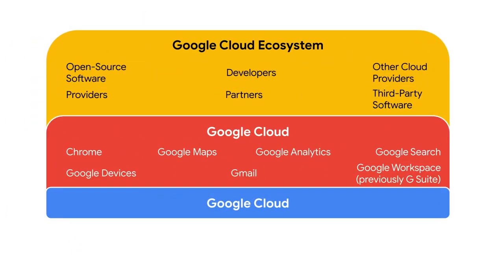When you look at Google Cloud, you'll see that it's actually part of a much larger ecosystem. This ecosystem consists of open source software, providers, partners, developers, third-party software, and other cloud providers. Google is actually a very strong supporter of open source software. Now, Google Cloud consists of Chrome, Google Devices, Google Maps, Gmail, Google Analytics, G Suite, Google Search, and the Google Cloud Platform. GCP itself is a computing solution platform that really encompasses three core features: infrastructure, platform, and software.